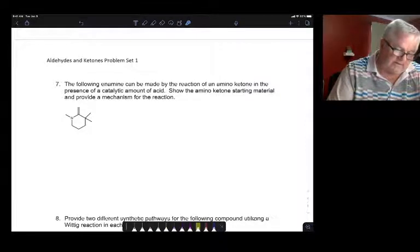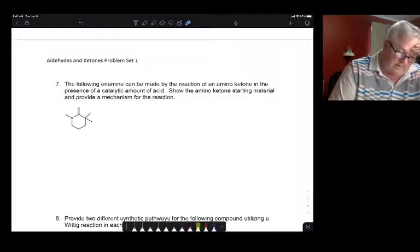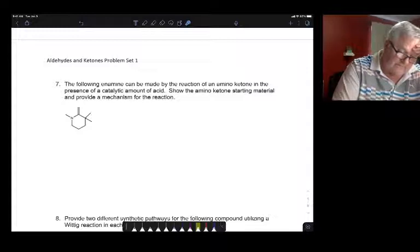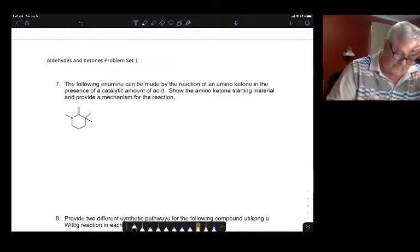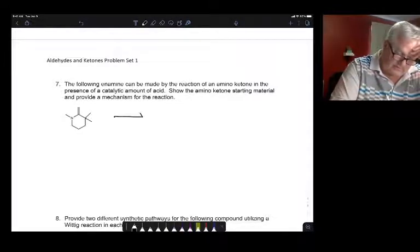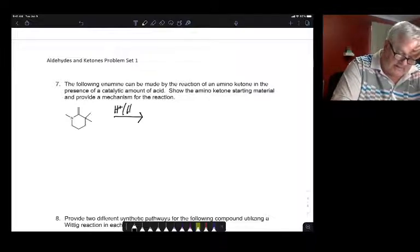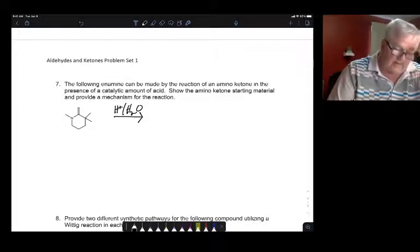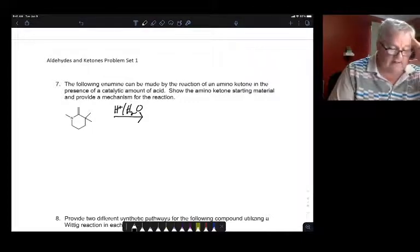Number seven, I'll start you off. The following enamine can be made by the reaction of amino ketone in the presence of a catalytic amount of acid. So the same thing is going to happen. This reaction is going to have acid and H2O. Now, there's a couple of things that are different here.